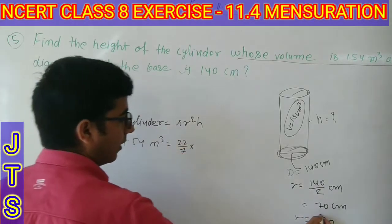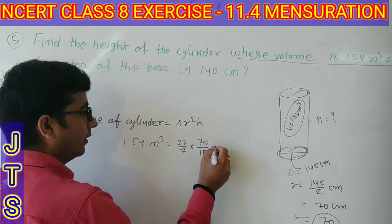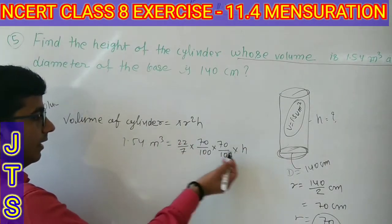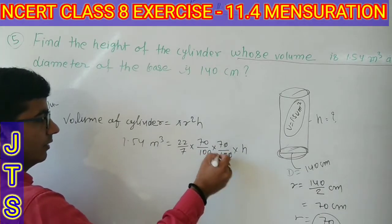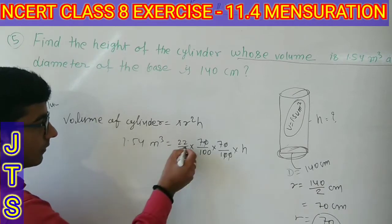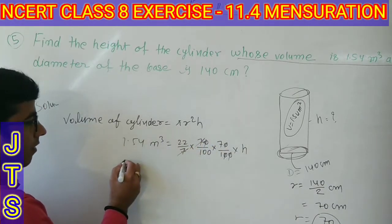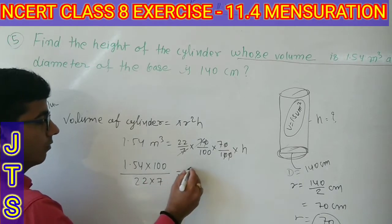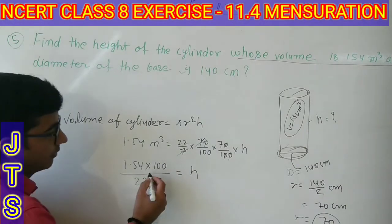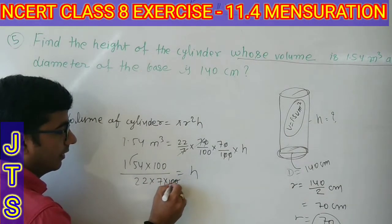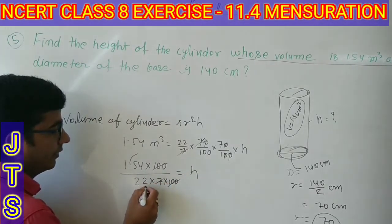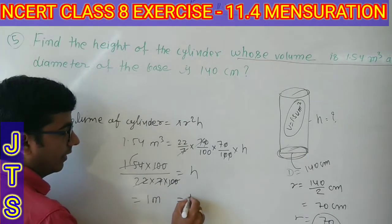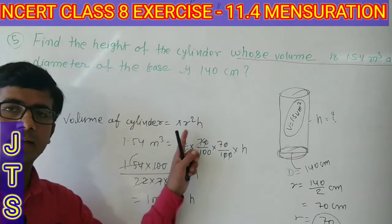The diameter of the base is given, so r = 70/100. Putting values: 1.54 = 22/7 × (70/100) × (70/100) × h. To find h: 7 and 7 cancel, 10 and 10 cancel. So 1.54 × 100 divided by 22 × 7 equals h. Calculating: 22 × 7 = 154, so h = 1 meter.